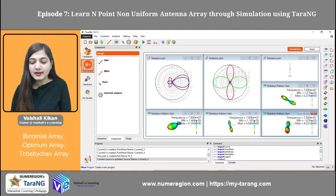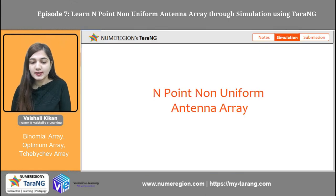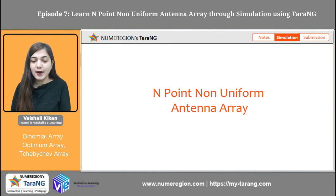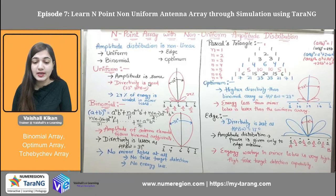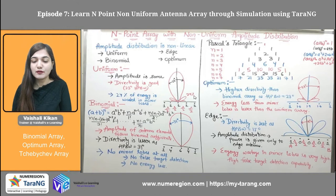I hope you understood the simulation part. Now we are moving towards the theory part of n-point non-uniform antenna array. We have already seen the simulation. In the n-point antenna array we have already talked about the uniform antenna array. In the uniform antenna array we had taken 5 elements. The amplitude of all 5 elements was 1. When the amplitude is the same, directivity is good — we can see the half power beam width is 23 degrees, which is good.